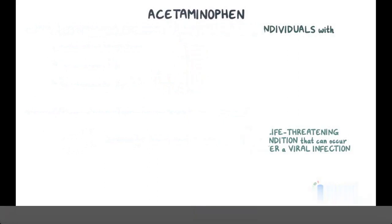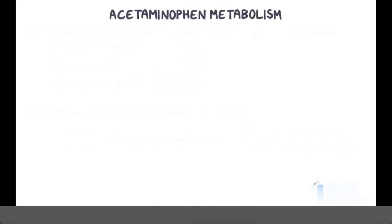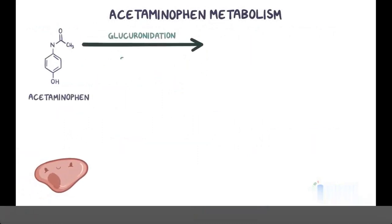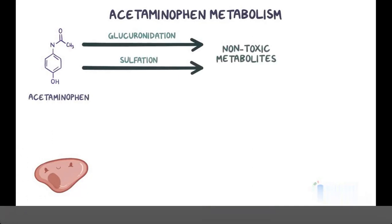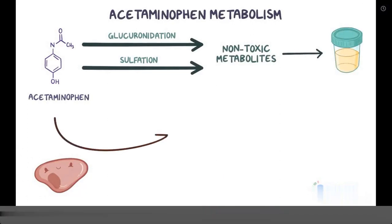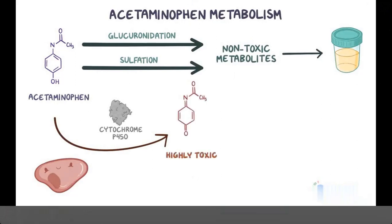Let's move on to the metabolism of acetaminophen, which is done by hepatocytes in the liver. Hepatocytes mainly metabolize acetaminophen by glucuronidation and sulfation into non-toxic metabolites, which are then excreted in the urine. However, a small amount of acetaminophen is also metabolized by cytochrome P450 enzymes to a highly toxic metabolite, N-acetyl-P-benzoquinone-imine, or NAPQI.